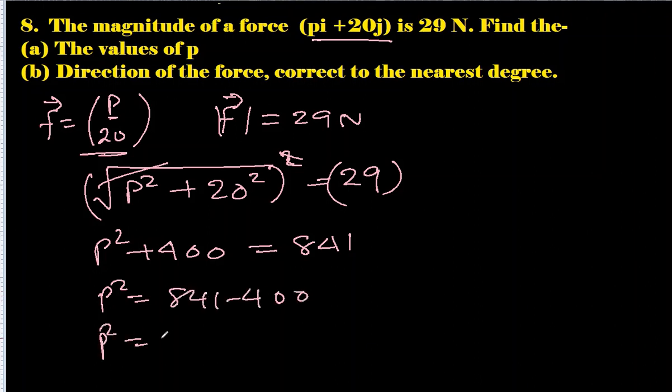So square and square root cancel out. p² + 400 = 841. So p² = 841 minus 400.